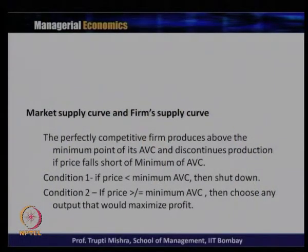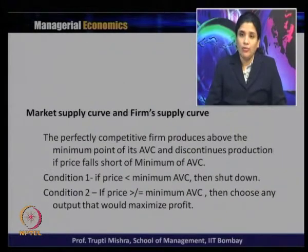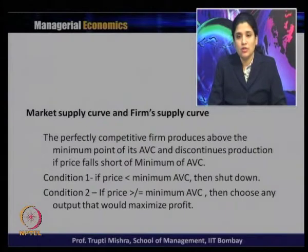To start with short-run market supply: we stopped our last session at the shutdown condition. If the price goes below the minimum of AVC, the firm shuts down. That is the starting point to analyze the short-run supply function in a perfect competitive market. The perfectly competitive firm produces above the minimum point of AVC, because below that level the firm cannot even cover variable cost.